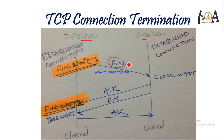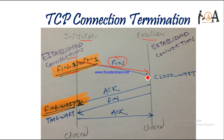Step one: the client sends a FIN bit to the server. After sending the FIN, the client waits in the FIN Wait 1 state, waiting for an acknowledgement from the server. After receiving the FIN, the server sets the FIN bit to one and sends an acknowledgement back to the client. After sending this acknowledgement, the client's state changes from FIN Wait 1 to FIN Wait 2, meaning it is now waiting for another response from the server with a FIN bit.